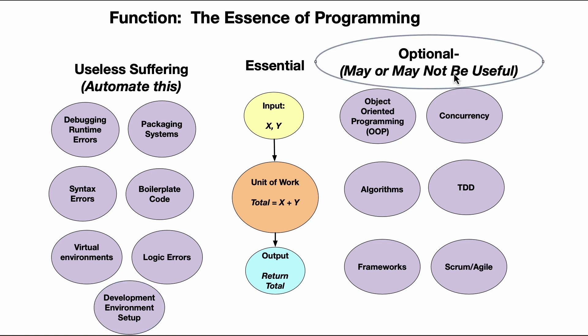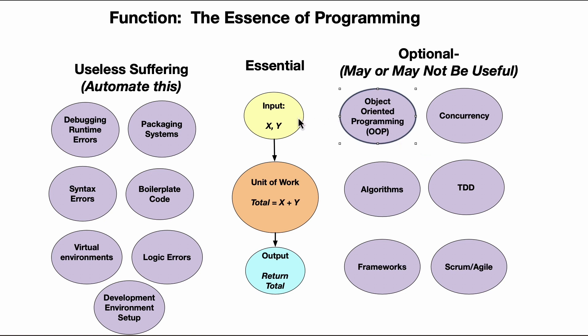Now let's talk about things that may or may not be useful. New programmers get confused when an elitist-type programmer says 'if you don't do object-oriented programming, you're not programming.' That's simply false. Programming is an input, a unit of work, and an output — you don't need objects. Object-oriented programming is a potentially useful abstraction, but it has nothing to do with learning to be a programmer.